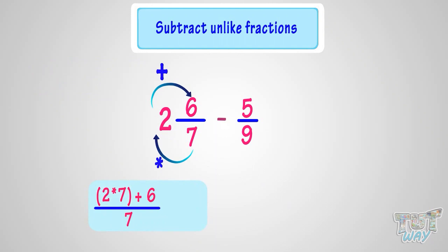7 multiplied by 2 equals 14. 14 plus 6 equals 20. Denominator remains the same, so its improper fraction is 20 by 7.